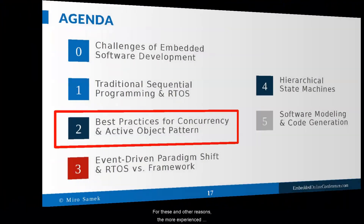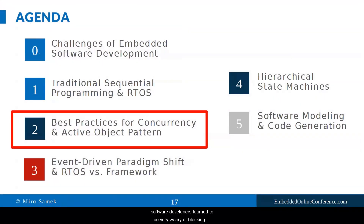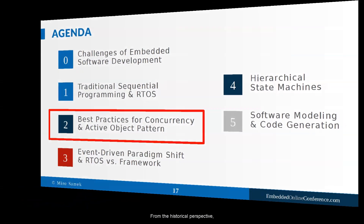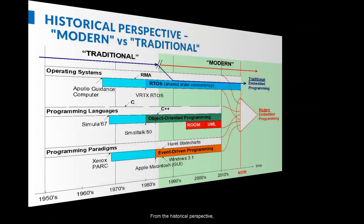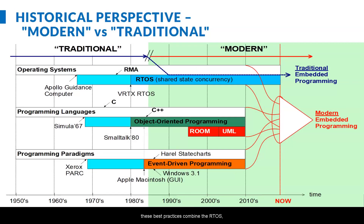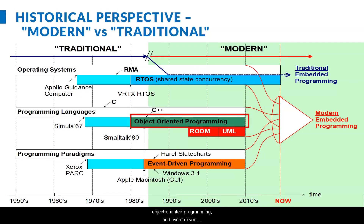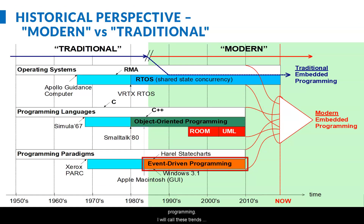For these and other reasons, the more experienced software developers learn to be very wary of blocking and instead they apply a set of best practices to reduce the blocking in their software. From the historical perspective, these best practices combine the RTOS, object-oriented programming, and event-driven programming.